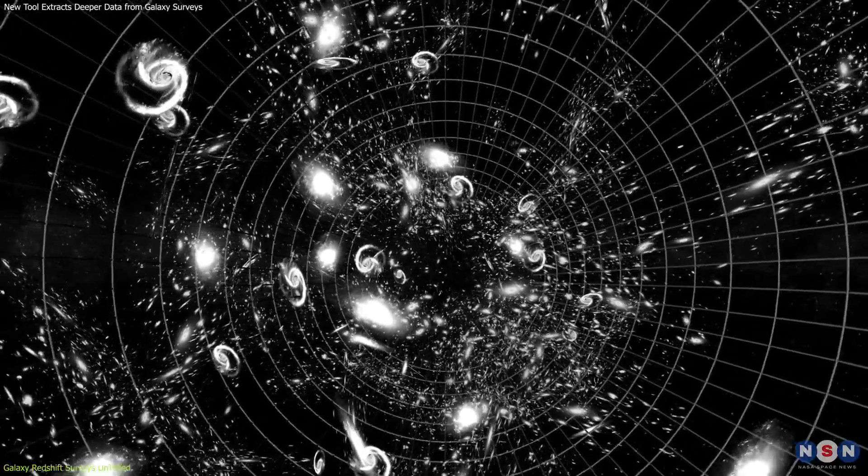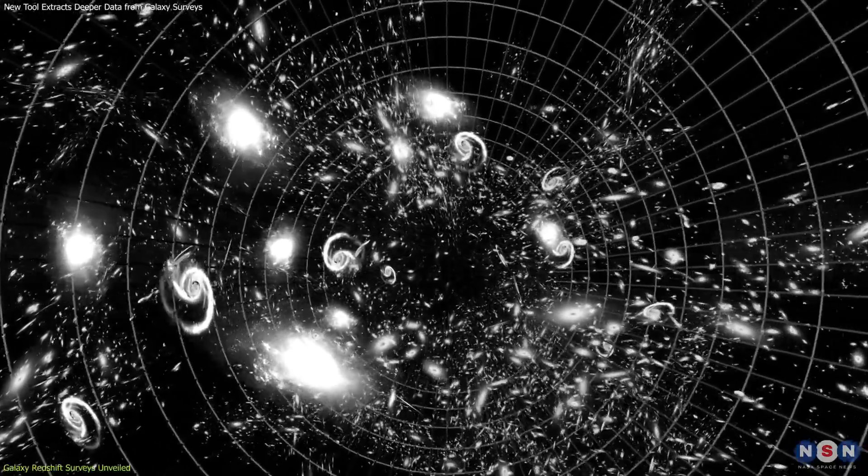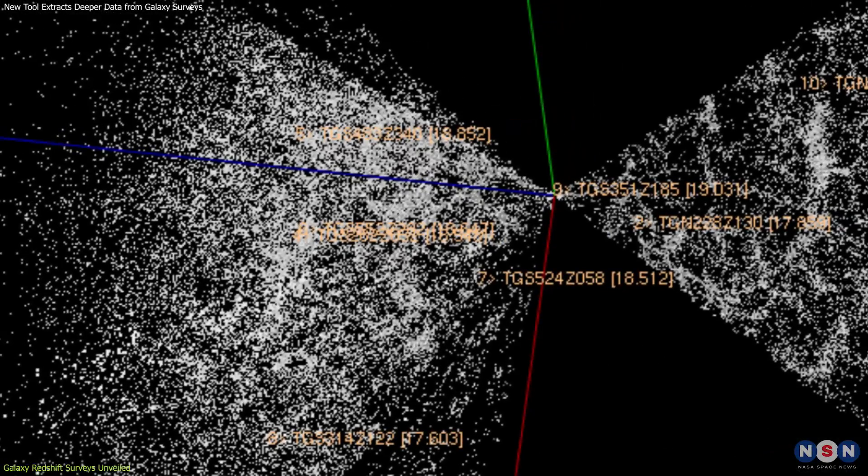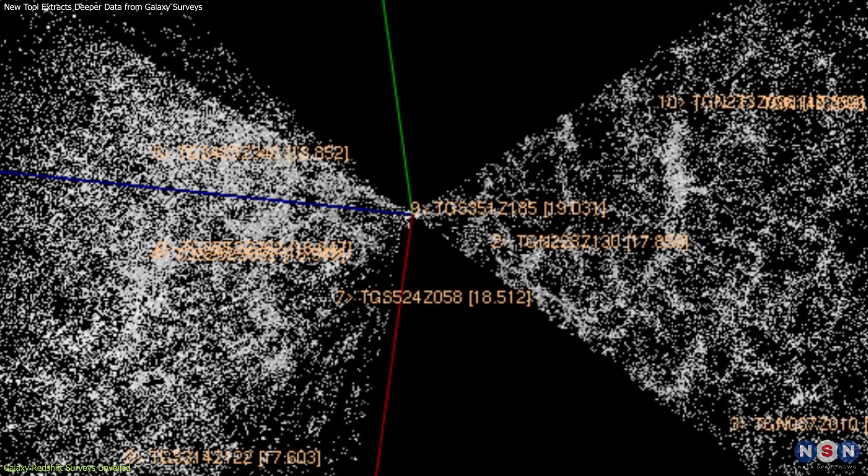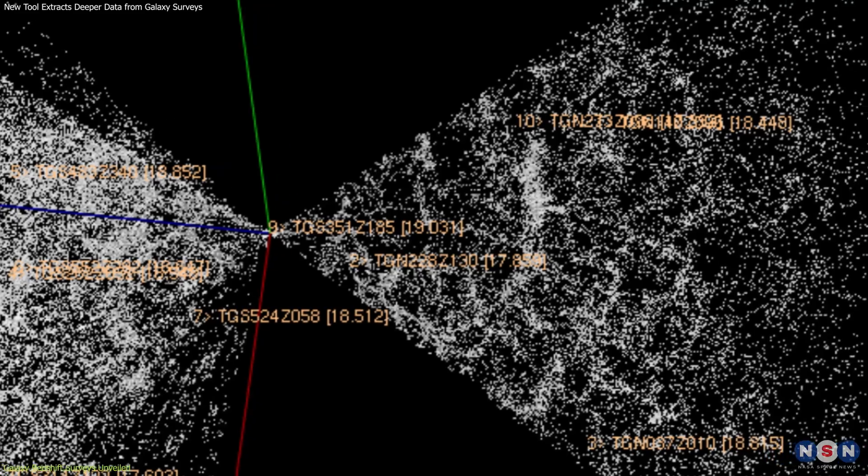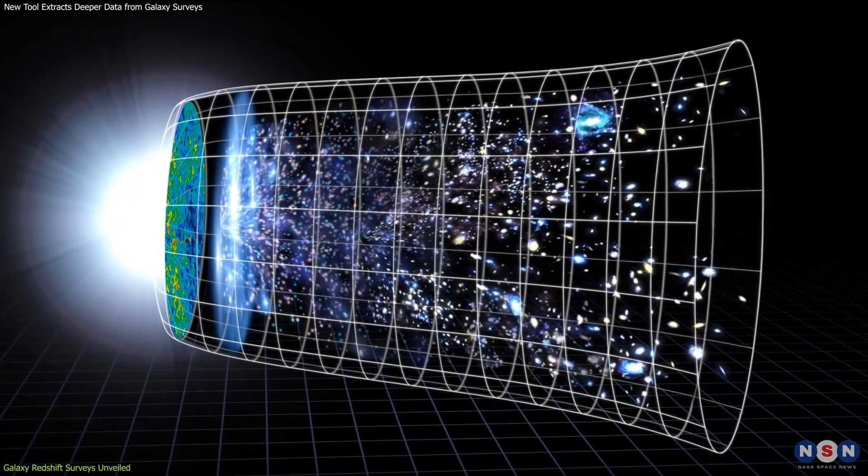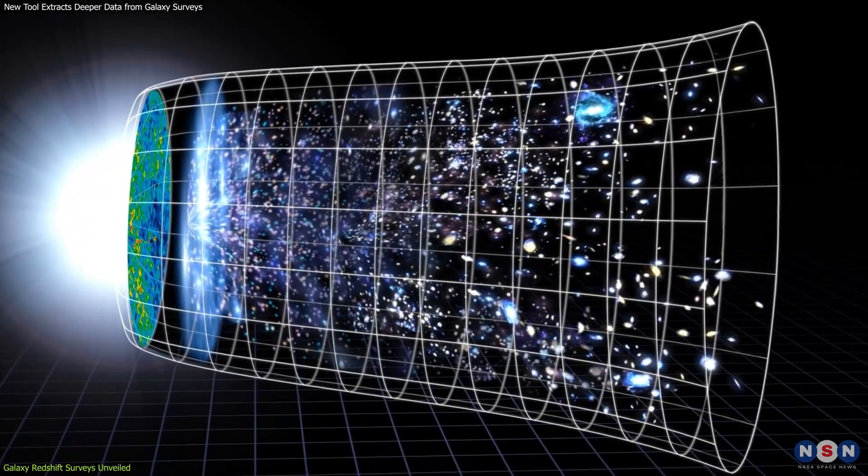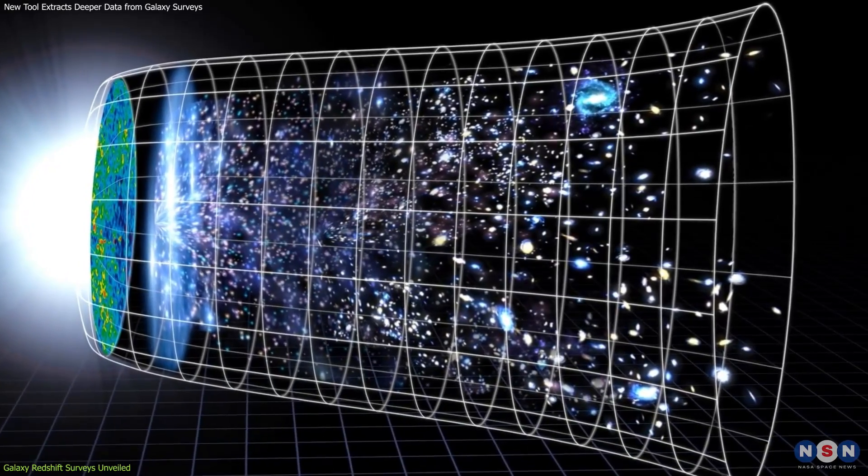These structures have evolved under the influence of gravity over billions of years. These surveys also enable scientists to test and refine cosmological theories. For instance, the Lambda Cold Dark Matter model, the current Standard Model of Cosmology, predicts specific patterns of clustering in the cosmic web.